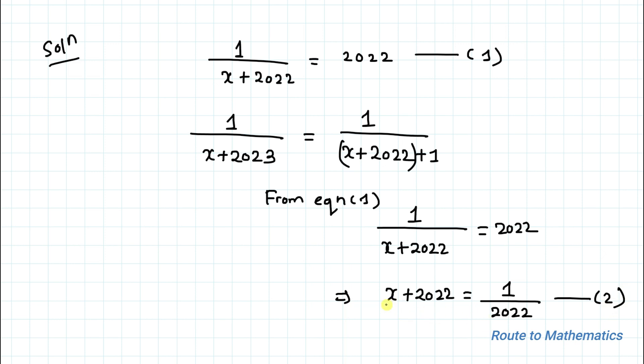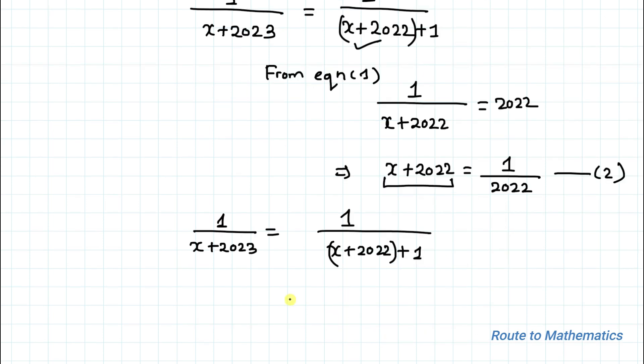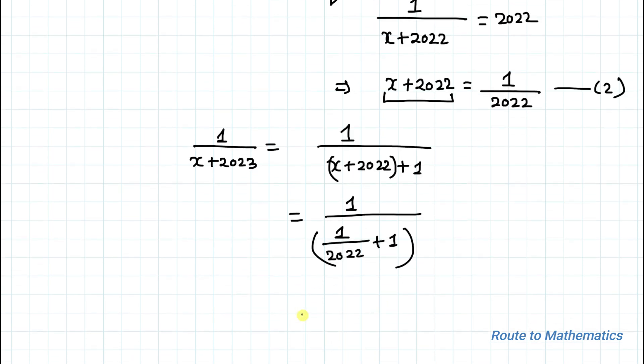Now let's just put the value of x+2022 here. So we can write 1/(x+2023) equals 1/(x+2022+1), which equals 1/(1/2022+1).